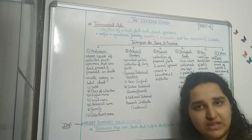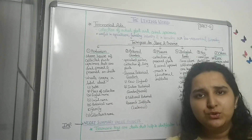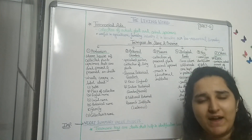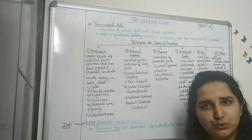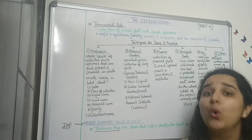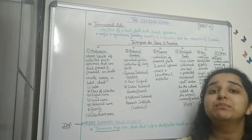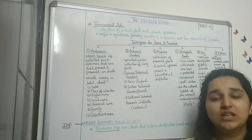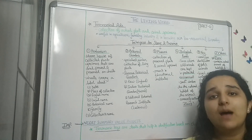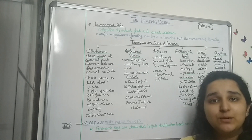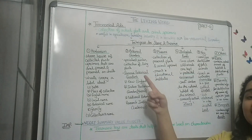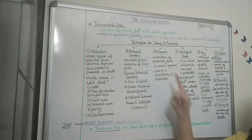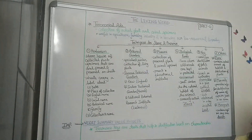So herbarium is the storehouse of plants — and these plants are not living. We are not providing soil, sunlight, or water; instead they are preserved between sheets. That was about herbarium. Now we move on to the second technique: botanical gardens.